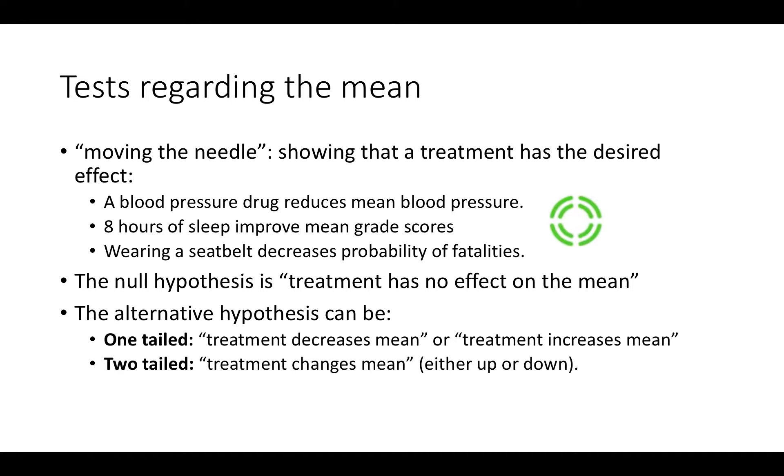And sometimes we're just interested in showing that there is some effect. We don't care whether it's down or up and that is called the two-tailed alternative hypothesis.